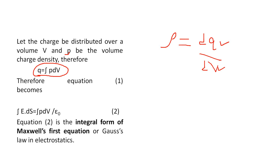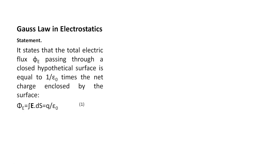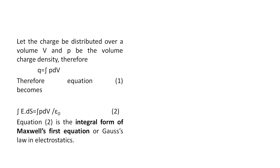Putting the value of Q into equation 1, we get the closed integral of E dot dS equals the integral of rho dV by epsilon-naught. This is equation 2, known as the integral form of Maxwell's first equation or Gauss's law in electrostatics. Equation 2 is for continuous charges, and equation 1 is for discrete charges. Continuous means we cannot differentiate between individual charges, like water. Discrete means individual charges q1, q2, q3, q4, etc.